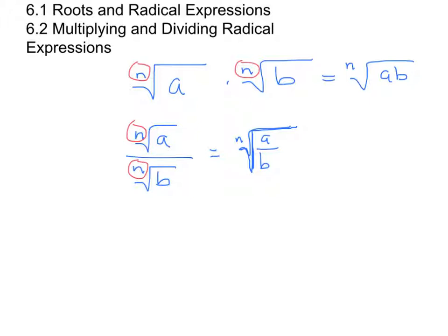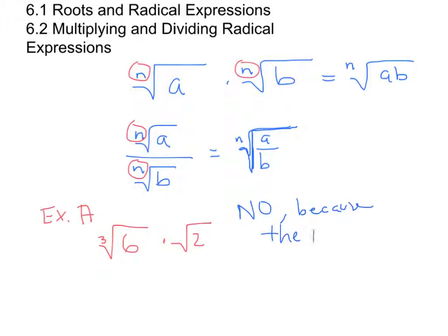Let's look at some examples. Example A: can you simplify the product of the cube root of 6 times the square root of 2? No, because the indexes are not the same — one is a cube root and the other is a square root — so we cannot further simplify this expression.